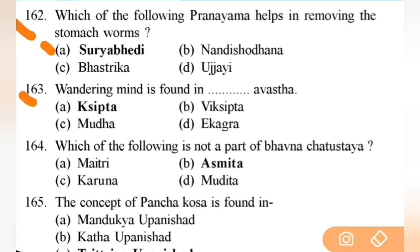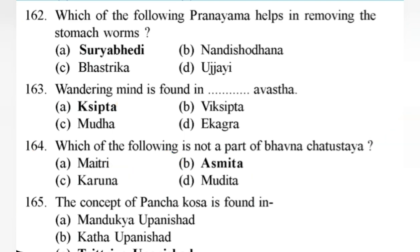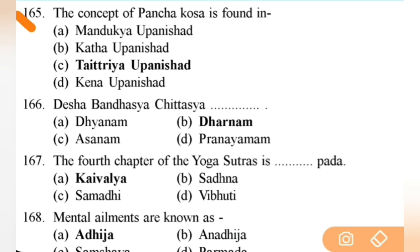Which pranayama helps in removing Phlegmatic disorders? Right answer is A — Surya Bhedi. Next: wandering mind is found in Desavastha and Kshipta Avastha. Next: which of the following is not a part of Bhavana Chatushtaya? Right answer is B — Asmita; all the others are parts — Maitri, Karuna, Mudita — important. Next: the concept of Pancha Kosha is found in — right answer is C — Taittiriya Upanishad — important.